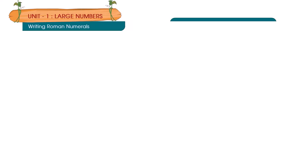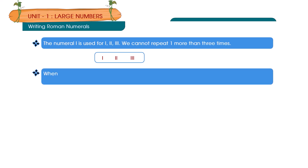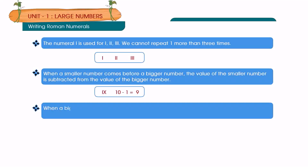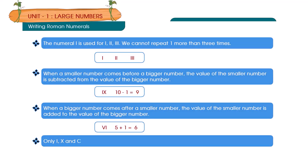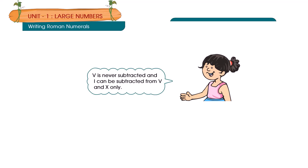Writing Roman numerals. Rule 1: The numeral I is used for 1, II for 2, III for 3. We cannot repeat I more than 3 times. Rule 2: When a smaller number comes before a bigger number, the value of the smaller number is subtracted from the bigger number. Rule 3: When a bigger number comes after a smaller number, the values are added. Rule 4: Only I, X, and C can be repeated, and none can be repeated more than 3 times. V is never subtracted, and I can only be subtracted from V or X.